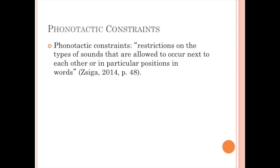Every language allows some combinations of phonemes and not others. These are the phonotactic constraints. Giga defines phonotactic constraints as restrictions on the types of sounds that are allowed to occur next to each other, or in particular positions in words.